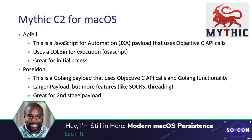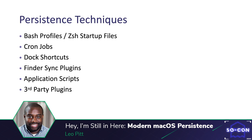Due to the relatively small size of the AppVell payload and its flexibility — you can customize the loaded commands upon creation, further reducing its size — it serves as a great payload for initial access and persistence. Another macOS payload worth noting is Poseidon, a Golang payload that uses Objective-C API calls and Golang functionality. It results in a larger payload than AppVell but has additional features like sockets and threading, as well as macOS inter-process communication via XPC and functionality to aid process injection, making it a great second-stage payload. The persistence techniques I'll cover are bash profiles and their Z-Shell equivalents, cron jobs, dock shortcuts, Finder sync plugins, application scripts, and third-party plugins.